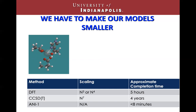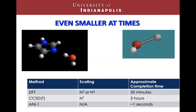Using that reduced model, density functional theory is going to take about five hours with a single CPU. Coupled cluster is still a bit expensive at four years per run, which is more than we have. Machine learning would take about eight minutes, or actually less with a GPU. But in order to use coupled cluster CCSD(T), we have to go even smaller at times. So these are what we call model systems — smaller versions of the interactions we're really trying to study.